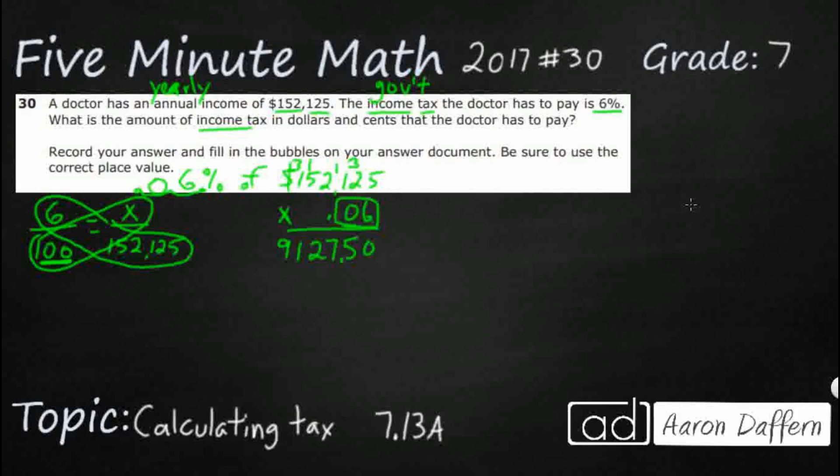So this X right here, if we wanted to go and write that out, is going to equal $9,127.50. That is 6% of the full income of $152,125.